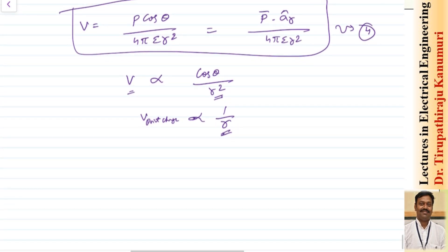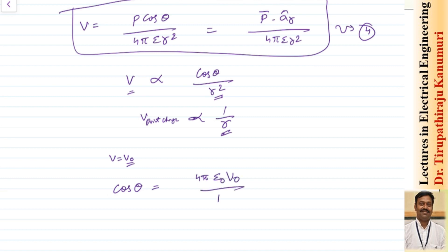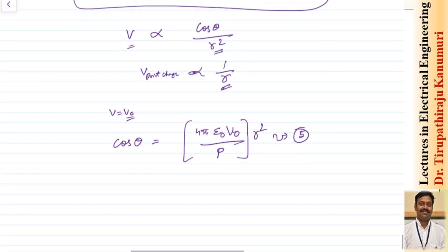For a specific value of the potential function, let us assume that the value of V is equal to V naught at some particular point. Using equation number 4 we can calculate the value of cos theta: cos theta is equal to 4 pi epsilon naught V naught divided by P into R squared. Let us take it as equation number 5.